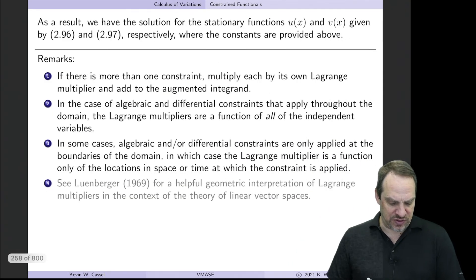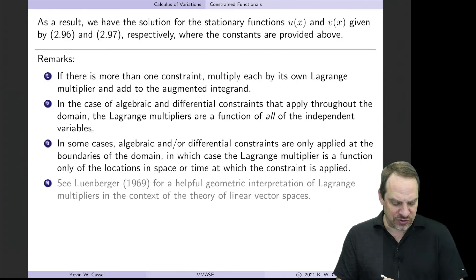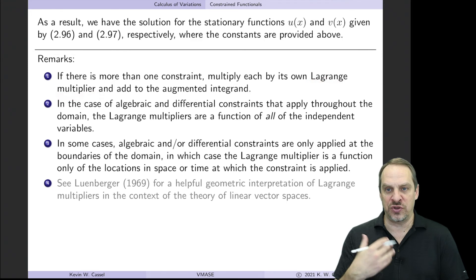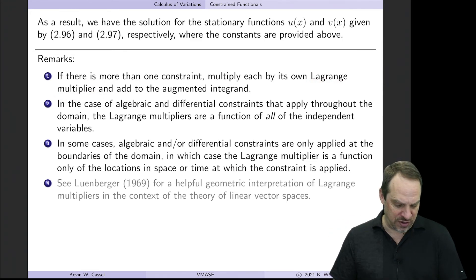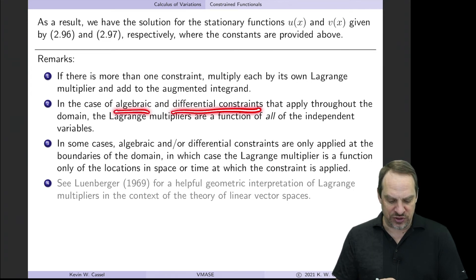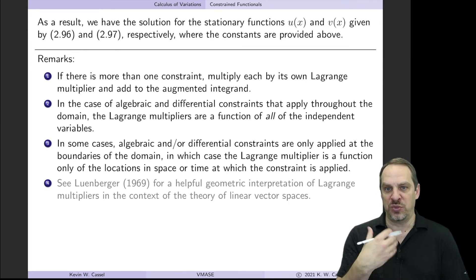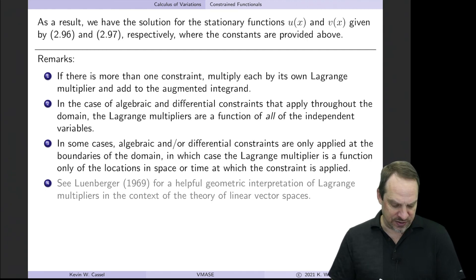A number of comments: first, you could have more than one constraint, and if so, you just have a Lagrange multiplier for each — lambda 1 times the first constraint, lambda 2 times the second. Remember that algebraic and differential constraints require Lagrange multipliers to be functions of all the independent variables, so in multi-dimensional problems they'd be functions of x and y, or x, y, and z.